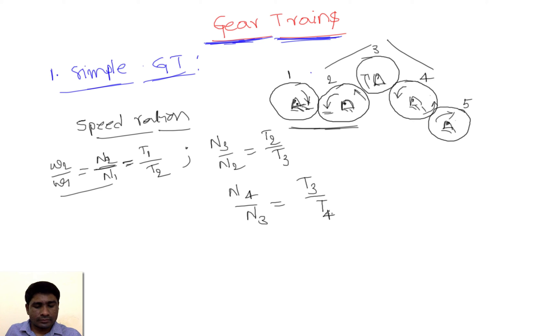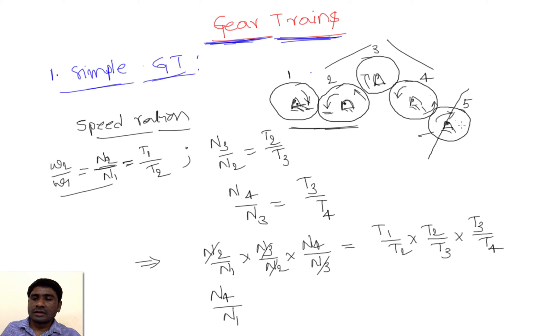So if I multiply all these velocities, what happens? This and this will get cancelled, this and this will get cancelled. So finally we get n4 by n1. Let's say gear 5 is not there and we consider only up to gear 4. This is n4 by n1, that means driven speed by driver speed. If I consider gear 1 as the driver and gear 4 as the driven, driven speed by driver speed is generally called as speed ratio.